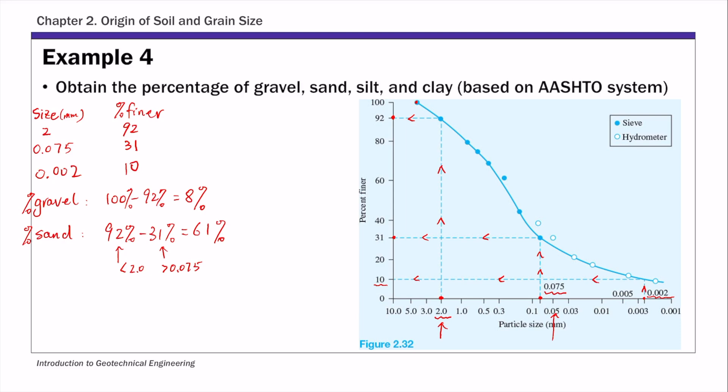So that percentage is sand. And then similarly for silt, its percentage is the percent finer than 0.075 which is 31 minus the percent larger than 0.002 which is 10 percent, so percent of silt is 21 percent.